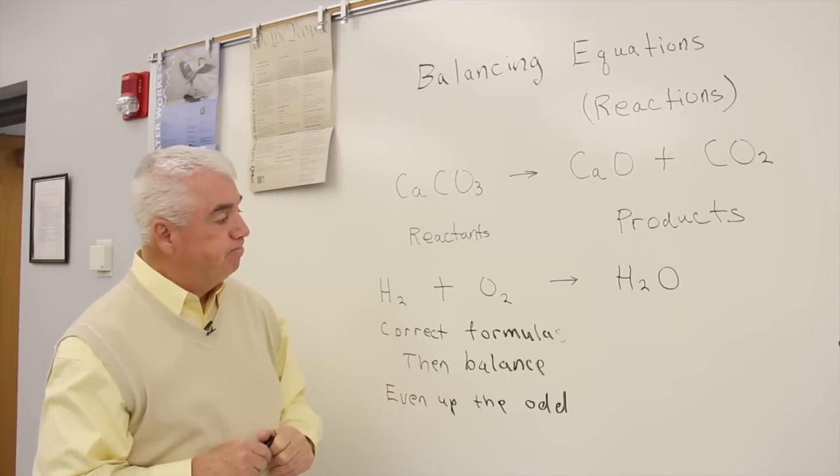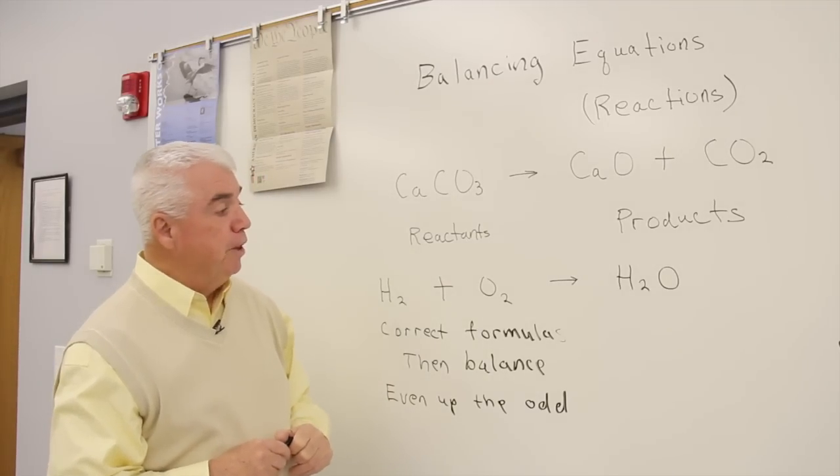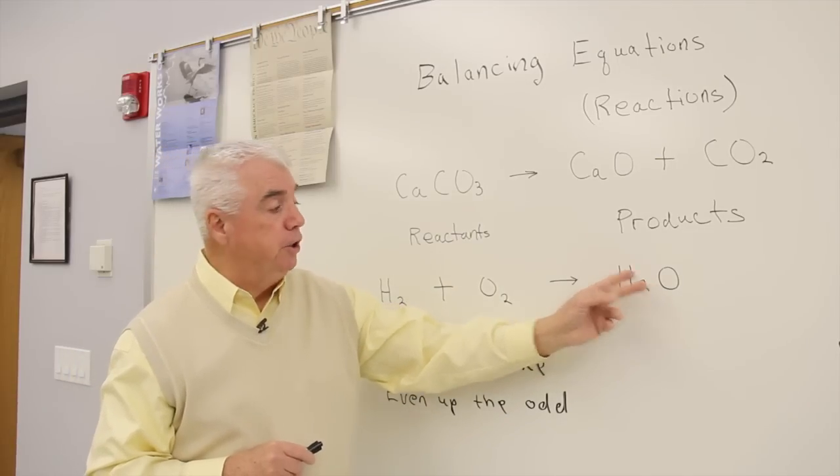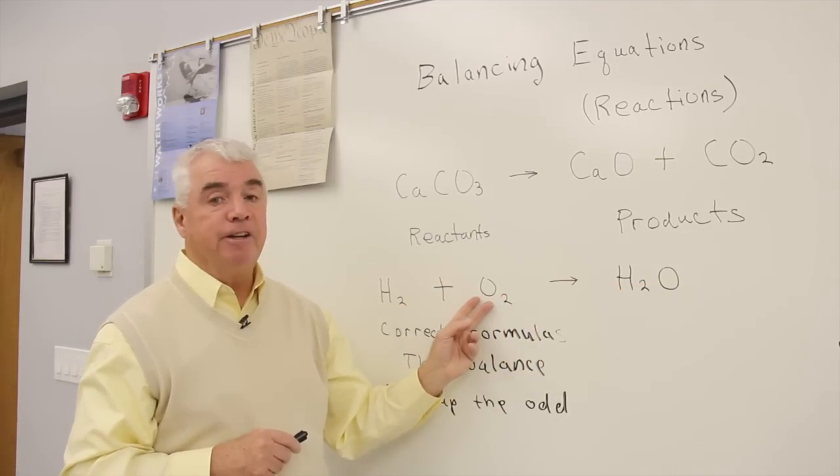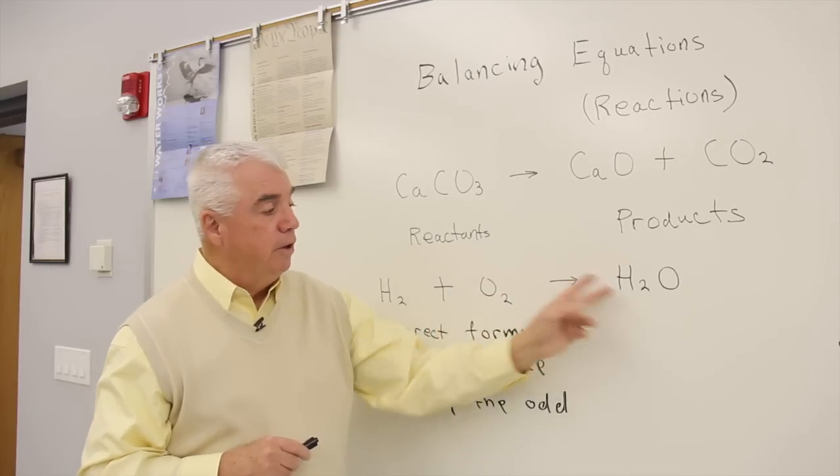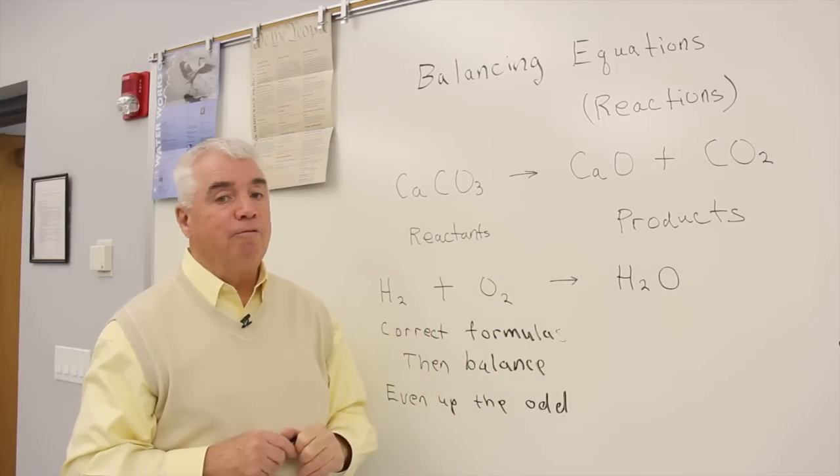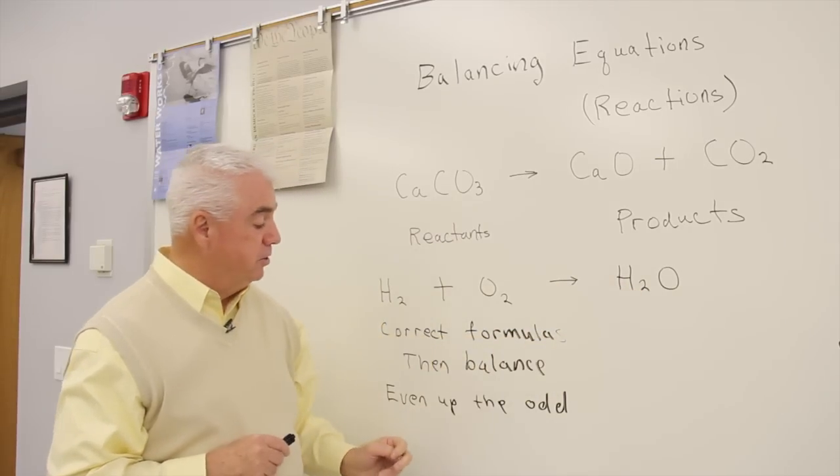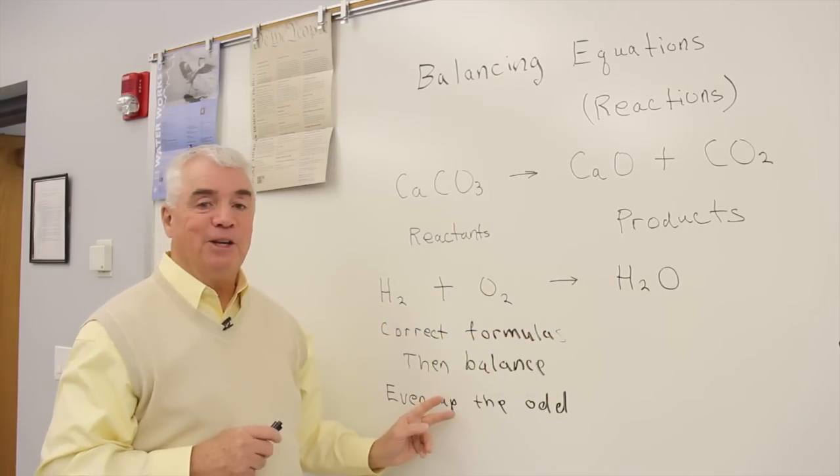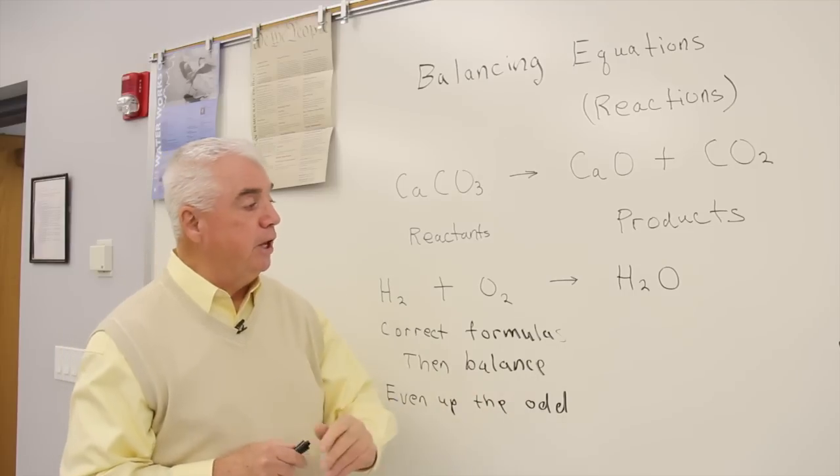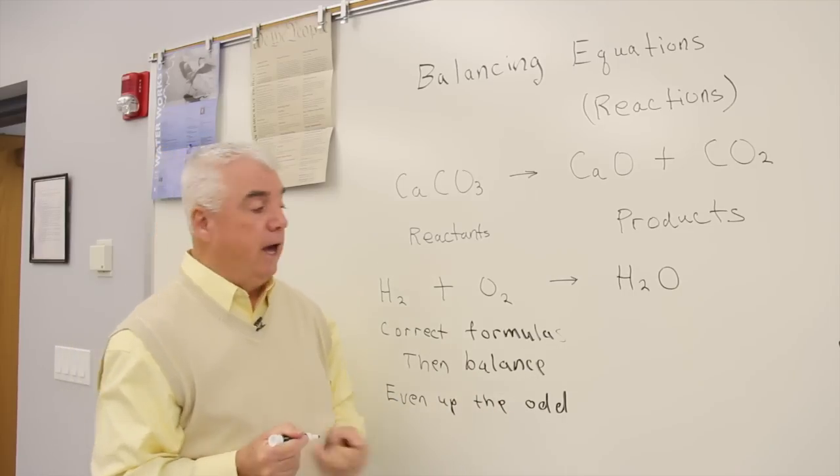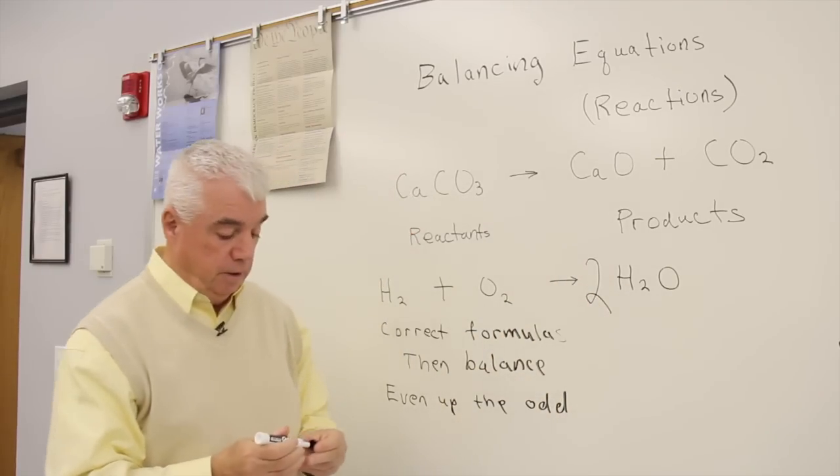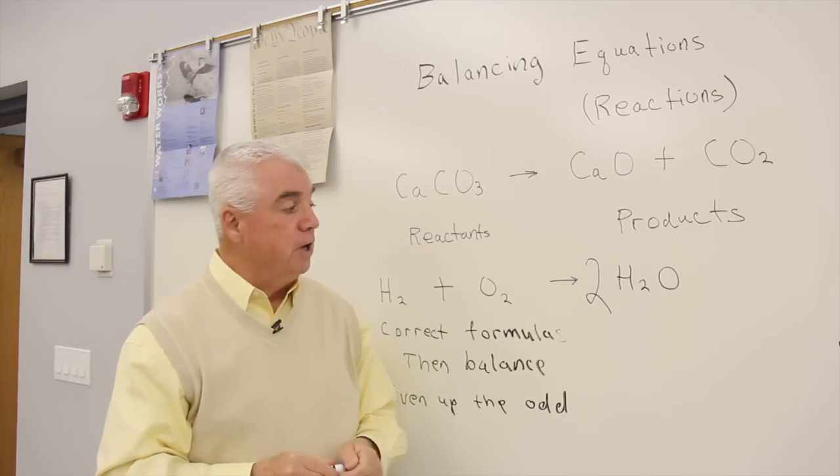And we'll do that. Notice over here I've got an odd number of oxygens, and on this side an even number. And the only way those two will ever be in agreement is if we even up the odd. That's a nice little trick to remember in balancing equations. Even up the odd. And I can do that by placing the number 2 in front of this formula on the right-hand side.